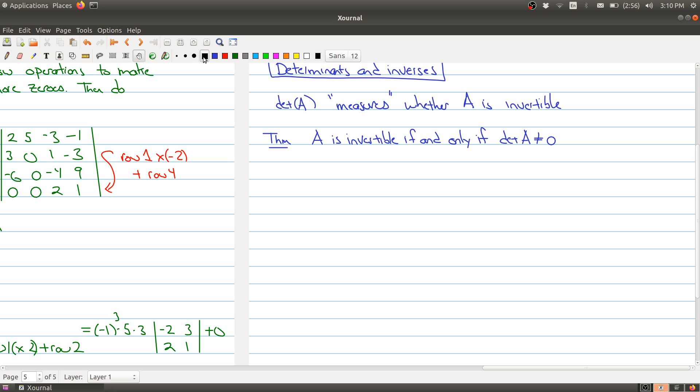All right. So here's the proof. So you have a square matrix. Let A be a square matrix. Now any square matrix, you can do row operations and you can turn it into its reduced row echelon form. Okay. There are row operations that change A into its reduced row echelon form. And let's call it R.